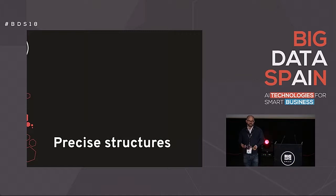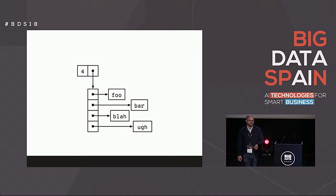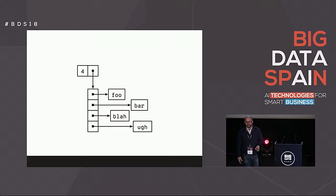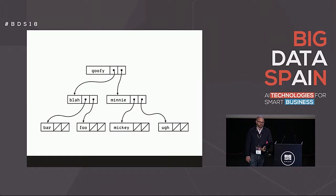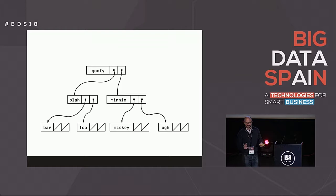Before we talk about a Bloom filter, I want to talk about how we would solve this with a precise structure — something that scales up linearly that we can't use for actual big data. The first way is with an array: if you don't have very many things in your set, you just have an array. If you have elements with some kind of ordering, you could use a tree and have logarithmic time lookup. The space is a little worse than an array, but not so bad.